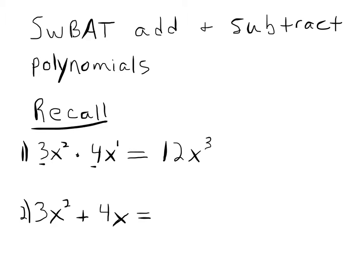However, on this one, when we are adding and subtracting, whenever you see addition or subtraction, the first thing that should come to your mind is like terms. Remember the two rules: exact same variable or variables raised to the exact same power. So this one has an x to the first power, this one has an x to the second power. Therefore, we cannot combine these — they're not like terms. So the answer would stay the same: 3x squared plus 4x.